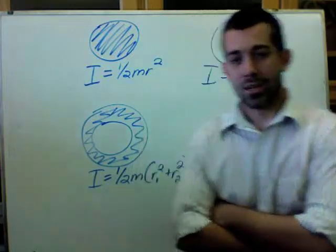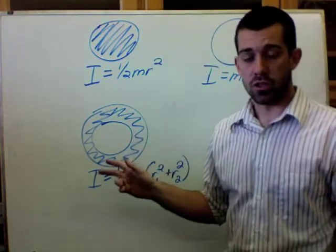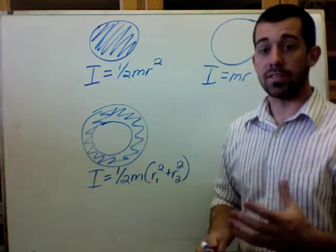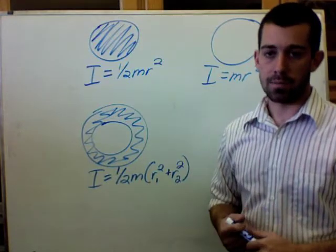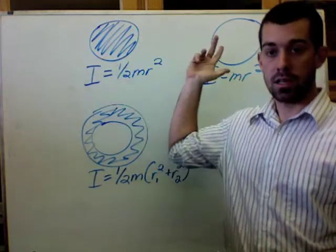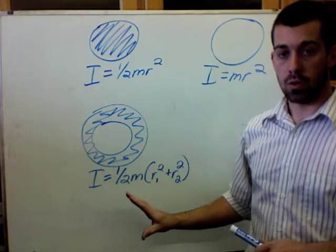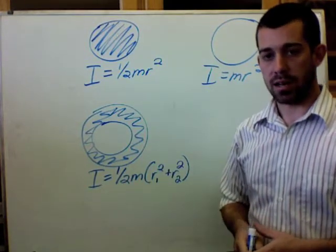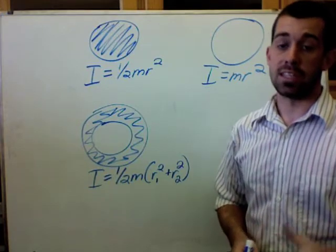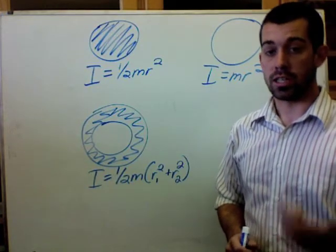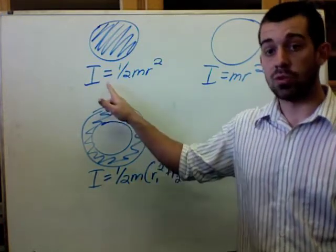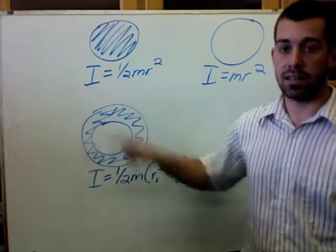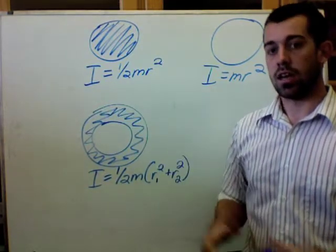All right, so this is the other situation you'll have on the AP test. You're given some weirdly shaped object, maybe a solid disk or a thin-walled hoop or a thick-walled hoop. If you're given any object like that and it's rotating and you need its rotational inertia, usually you will just be given a unique equation for I, the rotational inertia, in the problem.